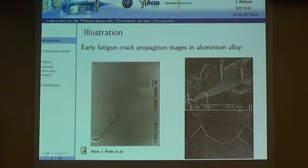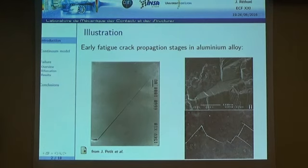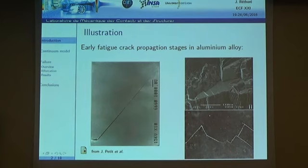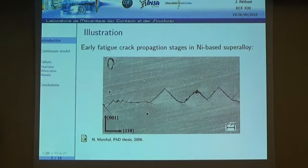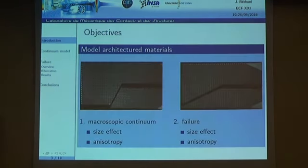We have many examples in the experimental literature which show an early stage of crack propagation for which there is a strong interaction between a crack and the microstructure, and crack paths that are strongly influenced by the microstructure.